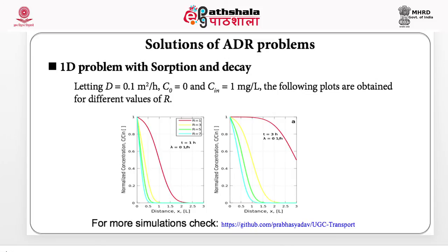Likewise, in the next case we have made the decay zero. If you see the figure on the left, there is a decay factor affecting transport. But if decay is 0, the transport of contaminant mass goes much further. This is how we can visualize the transport problem. This kind of visualization, along with many other mathematical codes, can be found on my website shown on screen. I specifically encourage you to look at this website, try to generate similar plots, and explore many such examples. On the website I have also solved many other problems that can be a very good starting point for further learning.